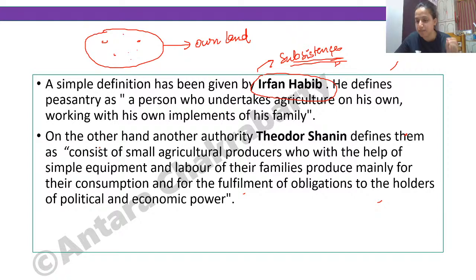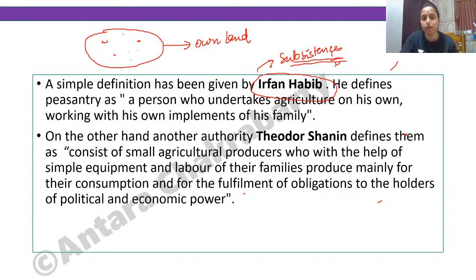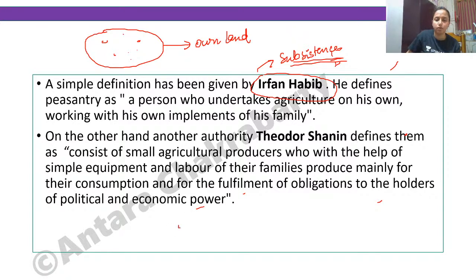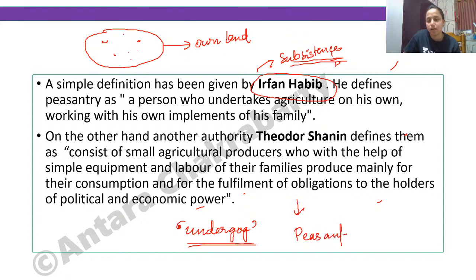Now we come to a very important thinker from the NET perspective — Theodore Shanin. Many questions have come from Shanin. His book is titled 'Peasant and Peasant Society.' He also gave the concept of 'underdog,' which is by Theodore Shanin. Please remember his book name as well.